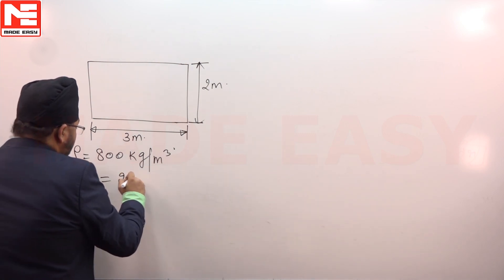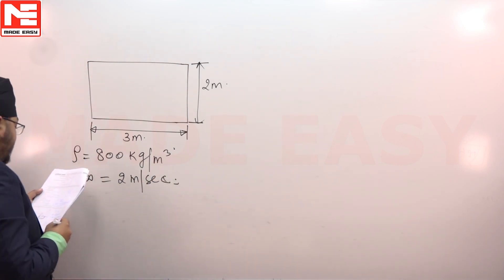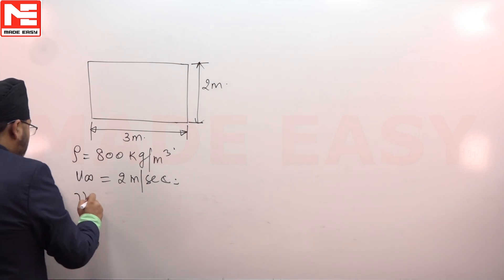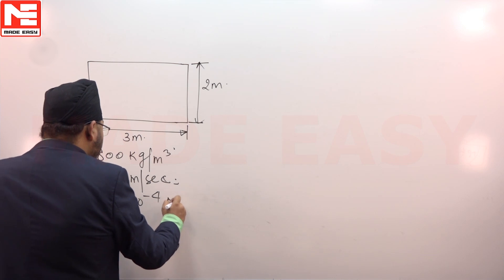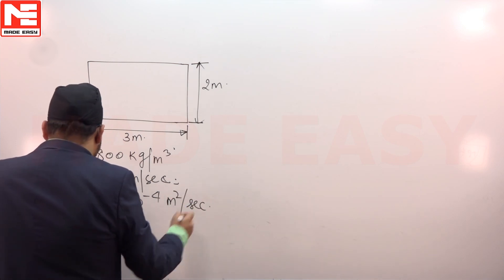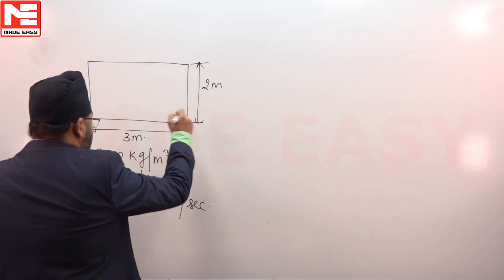The kinematic viscosity of oil is one stroke, that means 1×10^-4 meter square per second. Then the boundary layer thickness at the trailing edge will be at the trailing edge here. So first you have to find out the Reynolds number.